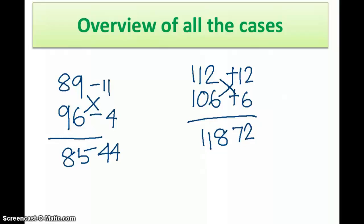The next case is one number is less than 100 and the other number is more than 100. So I have 87, which is less than 100, and 107, which is more than 100. 87 is 13 less than 100 and 107 is 7 more than 100. I multiply 13 into 7, which gives me 91. Either I do 87 plus 7 or 107 minus 13. Whatever I do in the crosswise direction, I get 94.